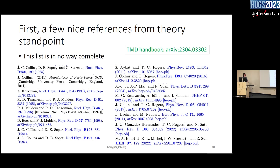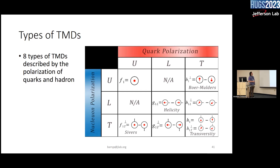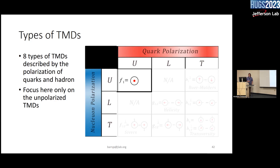I don't claim to be an expert on all of TMD theory — there is a TMD handbook on the arXiv, around 400 pages, that covers everything. Important names include Collins, Soper, Sterman — the CSS formalism — who set up the factorization framework for TMDs. John Collins's textbook Foundations of Perturbative QCD, the red book, is also an excellent reference. At leading twist there are eight types of TMDs depending on quark polarization and nucleon polarization — Boer-Mulders, helicity, transversity, Sivers, and the unpolarized TMD.